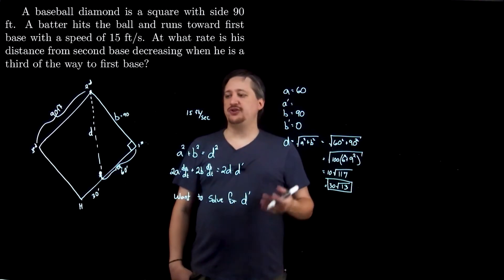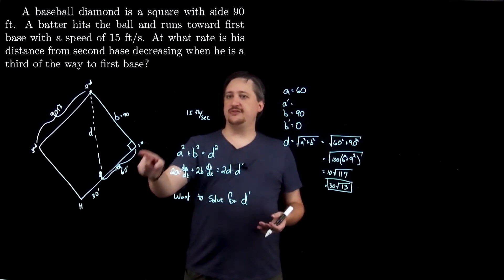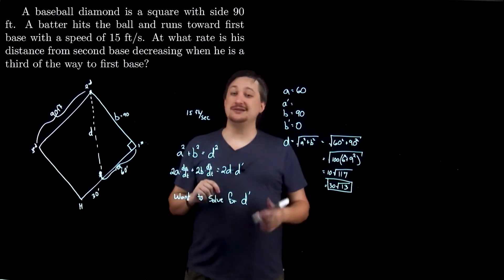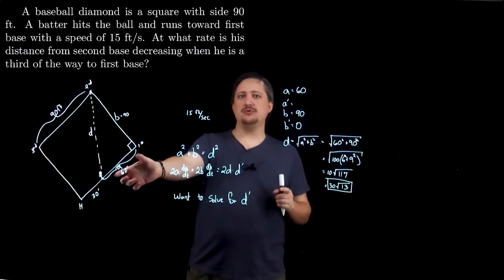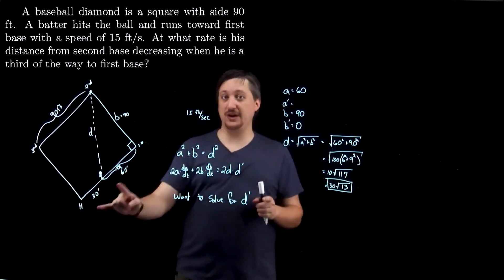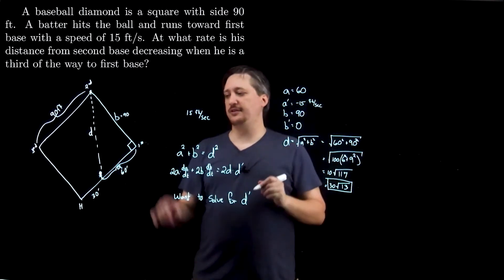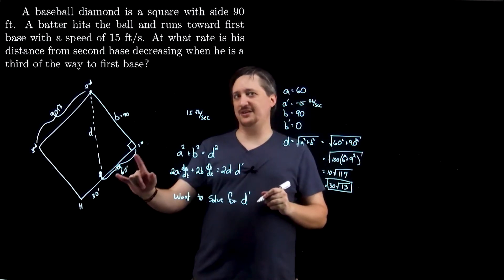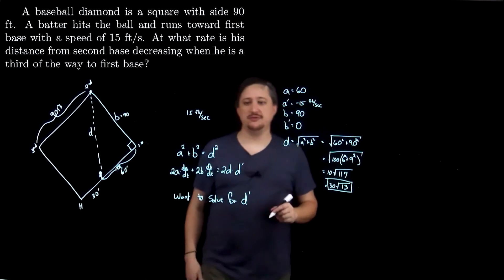Now, a prime is the change in a. So the change in a is 15 feet per second. But I have to be careful because this amount, this value is shrinking by 15 feet per second. So the actual change in a, because of the way I've labeled it, is -15 feet per second. Because the change in a is getting smaller over time. The distance to first is getting smaller as it goes.